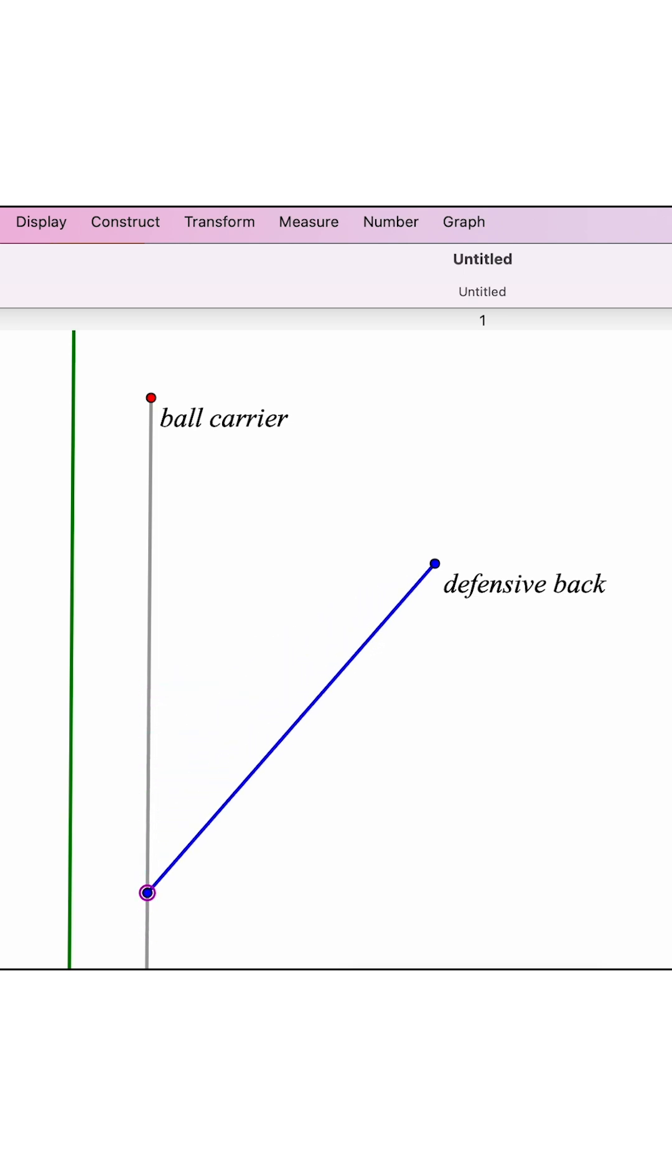So one strategy is to find a point on the sideline that is the same distance away from both the DB and the ball carrier. The set of all points that are equidistant from these two players is a perpendicular bisector of the segment between the two players.